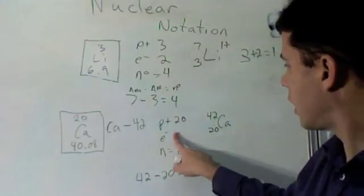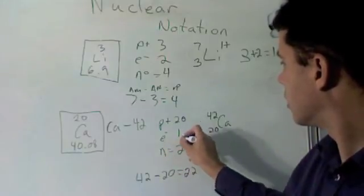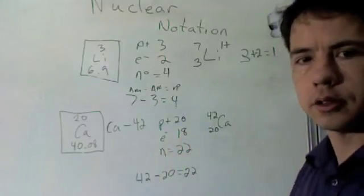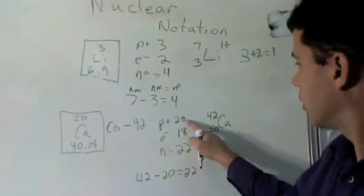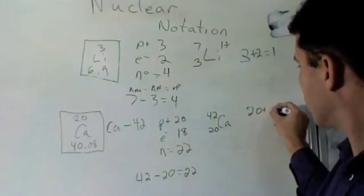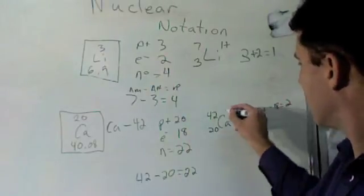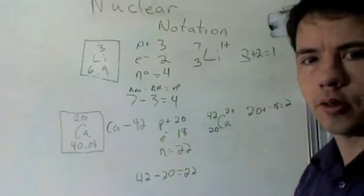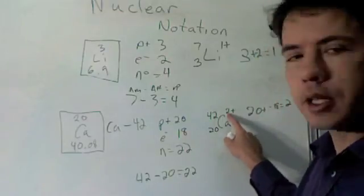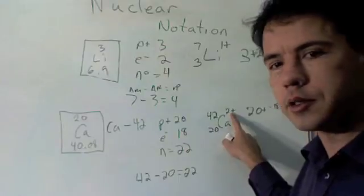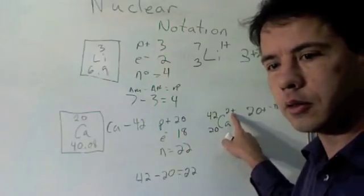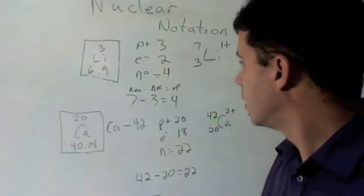Calcium. Let's say I had 18 electrons. 20 plus a negative 18 equals two. Two plus. Positive two. I know it takes some getting used to writing the positive after, but that's just the way we do it for chemistry.